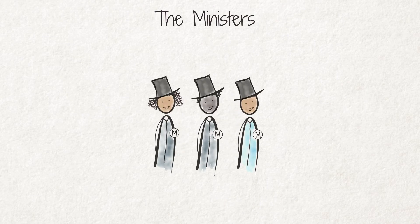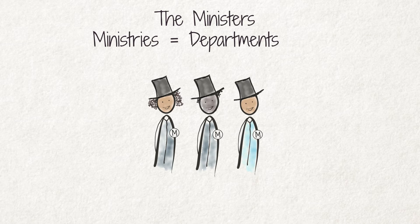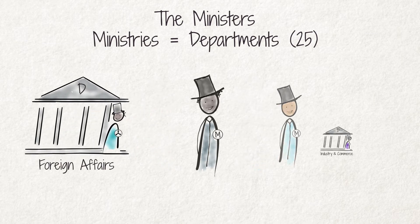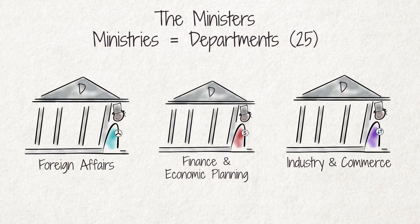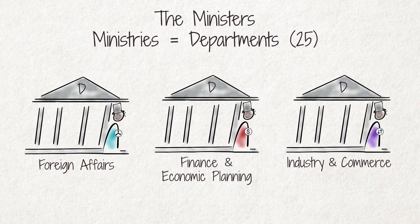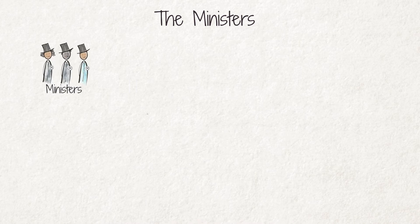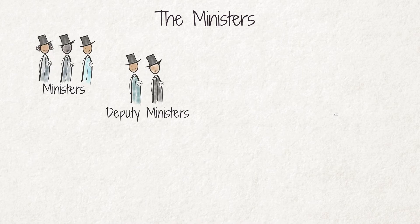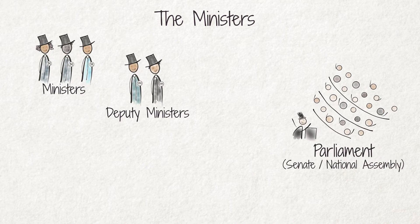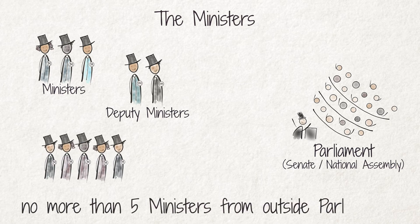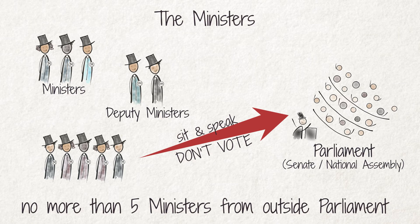The ministers are the heads of different ministries, also referred to as departments. There are about 25 departments in the Zimbabwean government — examples are foreign affairs, industry and commerce, or finance and economic planning. Ministers share their responsibilities with deputy ministers. The ministers and deputy ministers chosen from the Senate or the National Assembly remain members of parliament, while those chosen from outside parliament may sit and speak, but not vote in parliament.